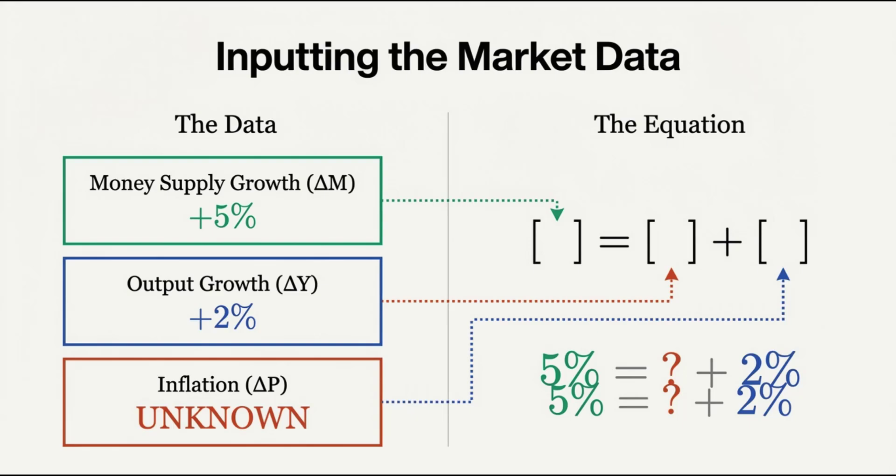So here's the setup. Imagine the total amount of money floating around in the economy goes up by 5%. At the same time, the economy itself, all the actual stuff and services we produce, only grows by 2%. So you've got 5% more money chasing only 2% more stuff. So where did that extra 3% just go?